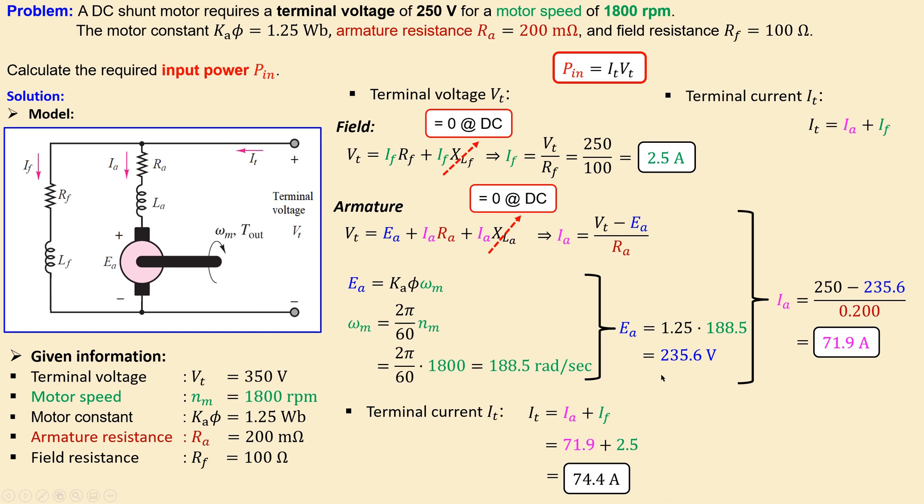Now we are now very close to the end result because we already have the terminal voltage from the given information in the example and we now also have the terminal current, which was actually the required value here. And now we can just use this formula and then multiply the given values and we have 18.6 kilowatts. That's now the required input power for this DC shunt motor and this concludes this example number four.